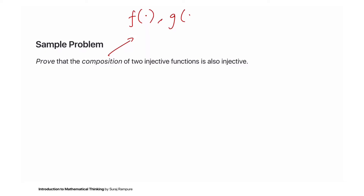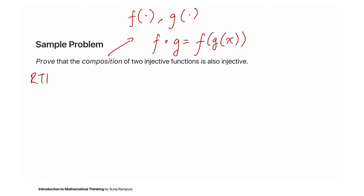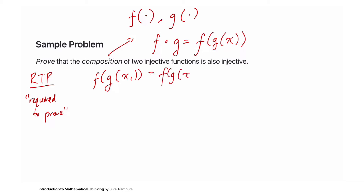If f is some function and g is some function, then the composition of f and g looks like f(g(x)). We want to prove that the composition of two injective functions is also injective. What we're required to prove is that if f(g(x1)) = f(g(x2)), then that must imply x1 = x2.